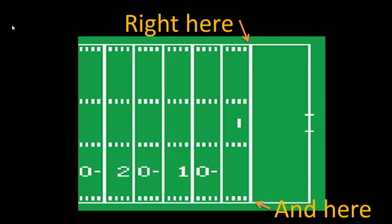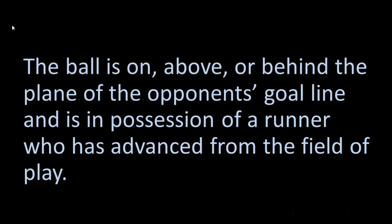There are five different ways that the rules describe how a touchdown can be scored, but they all essentially revolve around the ball crossing the goal line. The first way is that the ball is on, above, or behind the plane of the opponent's goal line, and it is in possession of a runner who has advanced from the field of play. In other words, a player with the ball runs into the end zone.